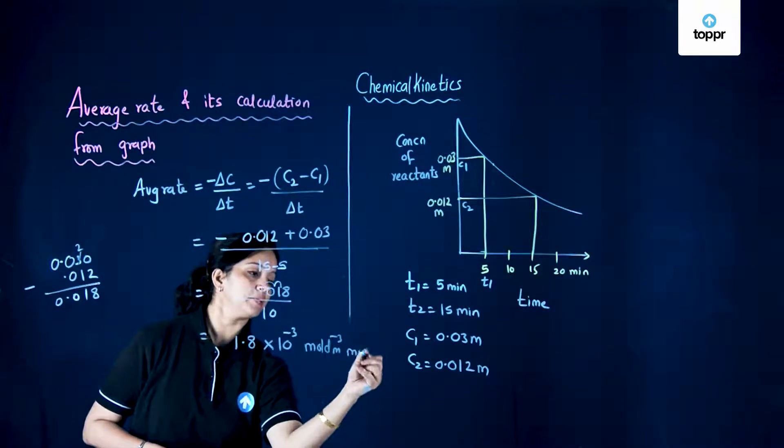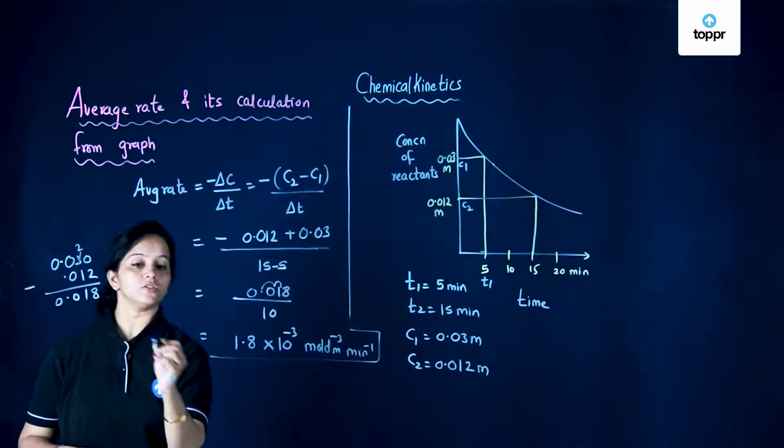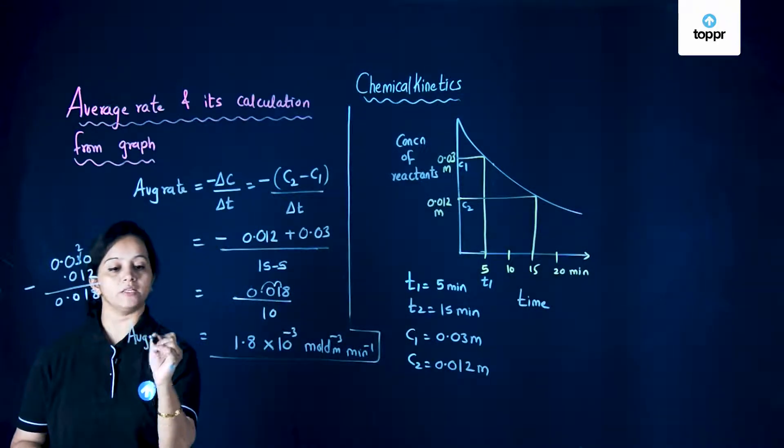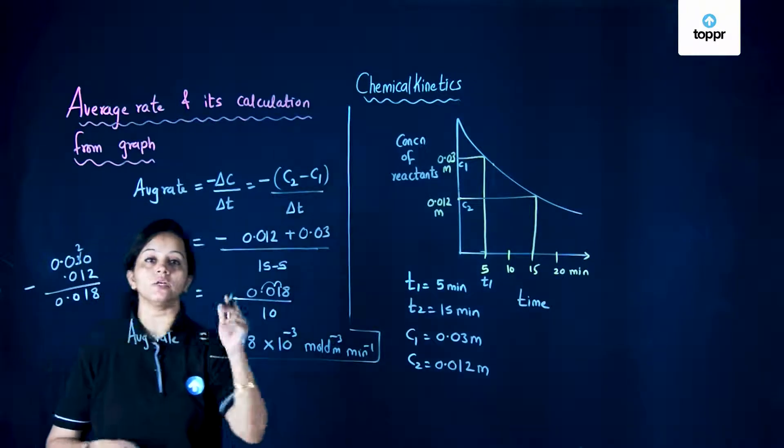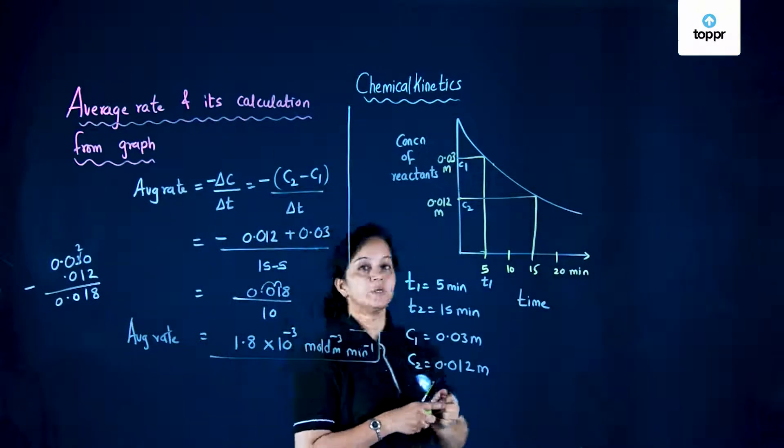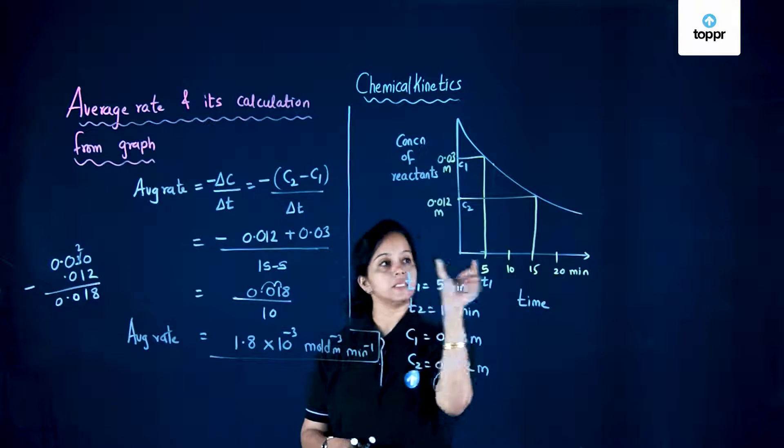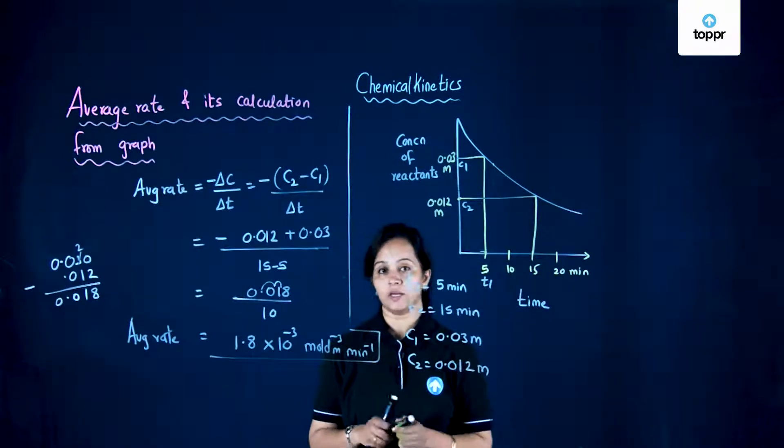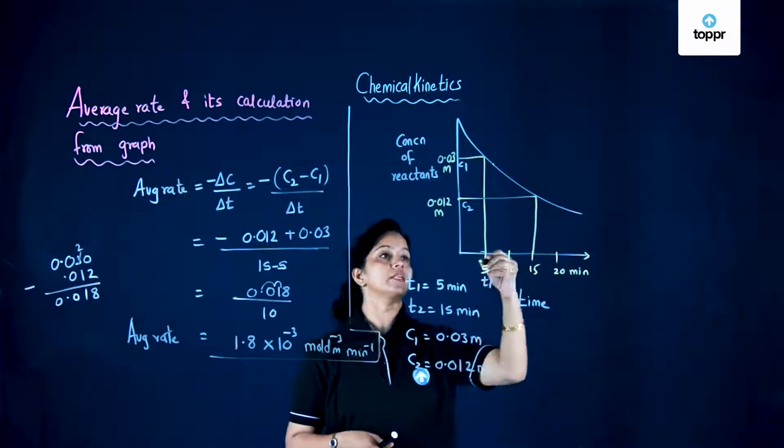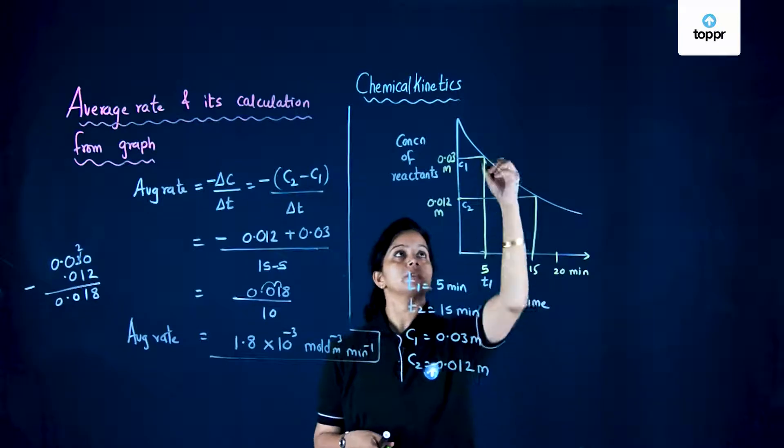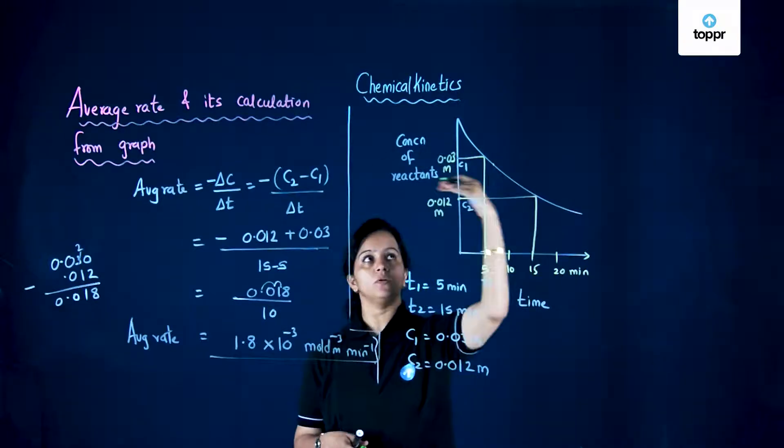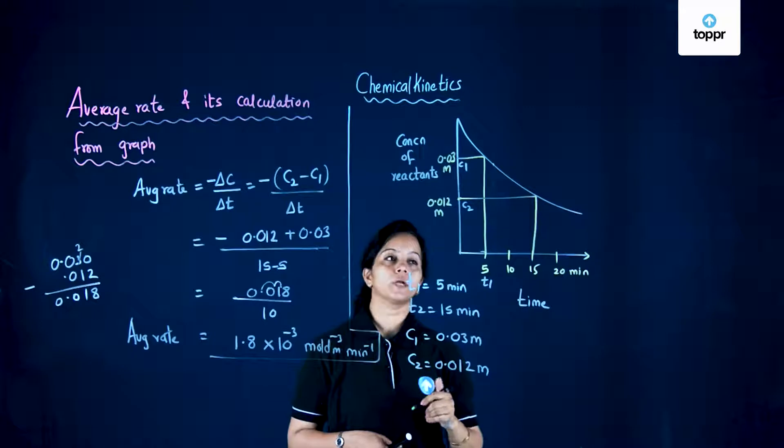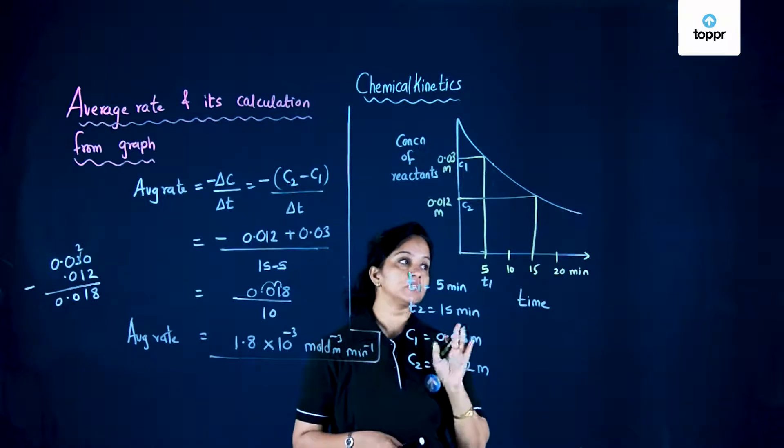So the average rate of the reaction is calculated in this way. In this interval, we want to find out the rate, so we extend this interval.